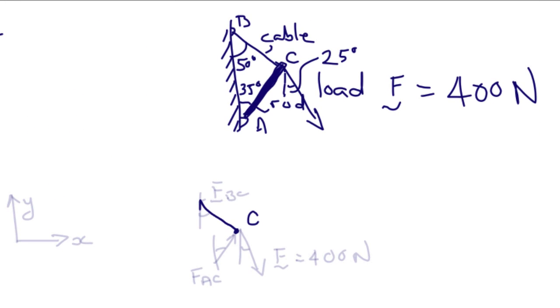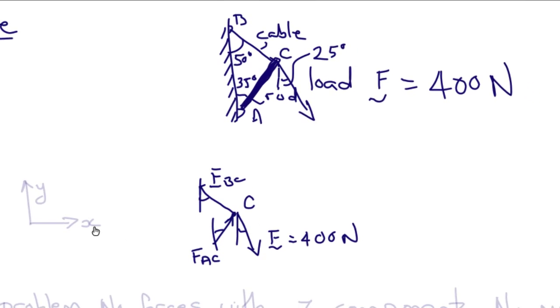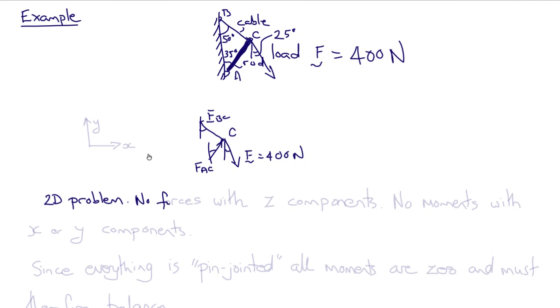So let's draw our free body diagram centered on C. So by making a cut in the cable, we expose a force here. And by making a cut in the rod, we expose a force here. We'll label the force in the cable FBC, the force in the rod FAC, and then the external load is F. We know the angles. And this is a 2D problem. So there are no forces with z components and no moments with x or y components.